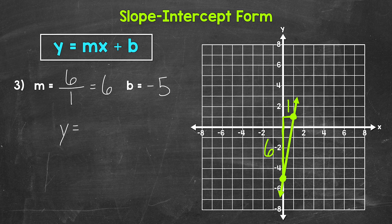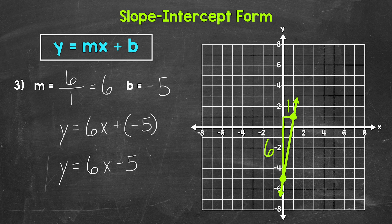So y equals 6x plus negative 5. Now, is this equation correct? Yes, it is correct, but we can simplify it so we don't have that double sign of addition and a negative. We can rewrite adding a negative as just subtraction, simplifying this to y equals 6x minus 5. Adding negative 5 and subtracting 5 give us the same thing, so either equation will work. A lot of times we will see slope-intercept form simplified to show a negative y-intercept as subtraction — so this is something to be aware of when we have negative y-intercepts.